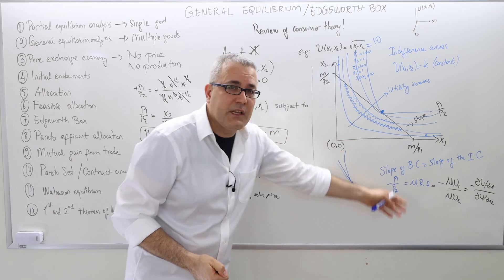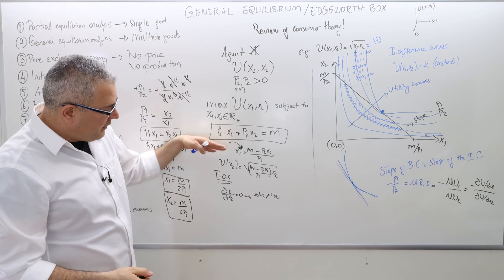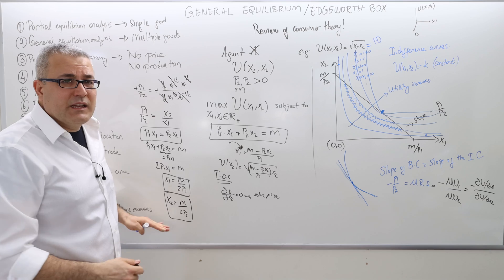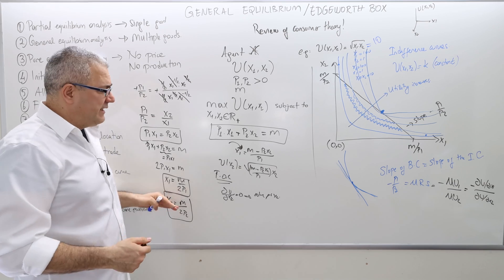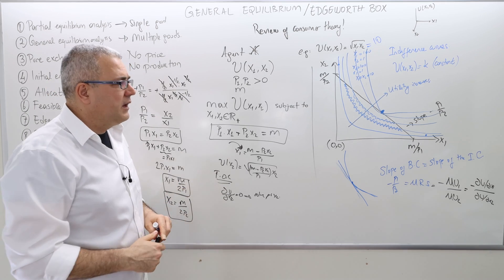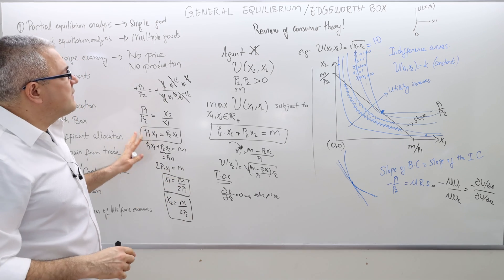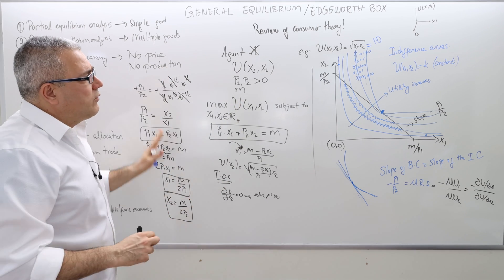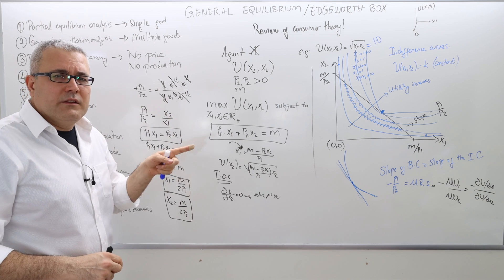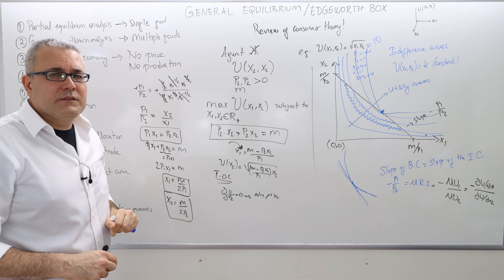Both approaches — the graphical tangency condition and the algebraic substitution method — give exactly the same solution. If they don't match, you've made a calculation error. This was a very quick review of consumer theory. In the next video, I'm going to talk about the Edgeworth Box.